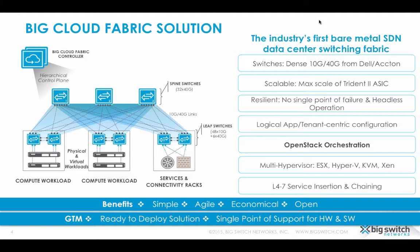The leaf and spine switches utilize the complete L2-L3 tables of the Trident 2 ASIC to provide maximum scale for the fabric. By leveraging bare metal switching hardware with our software, we deliver a very cost-effective, production-grade solution. BCF is actually delivered as a ready-to-deploy solution with a single point of support for the entire solution - including hardware, software, support, cables, and optics - either through Big Switch or Dell. Intelligence in the fabric is hierarchically placed, mostly in the Big Cloud Fabric Controller where configuration, automation, and troubleshooting occur through a single pane of glass.